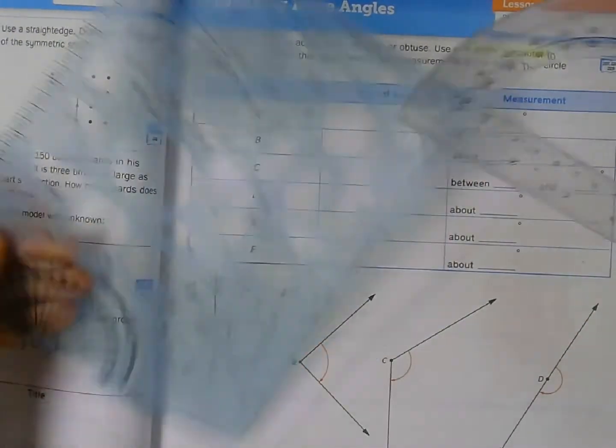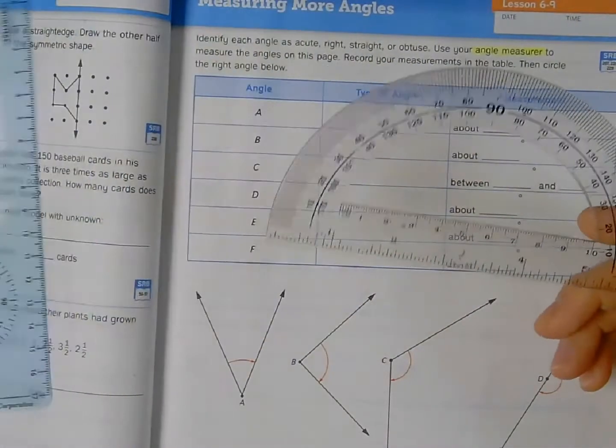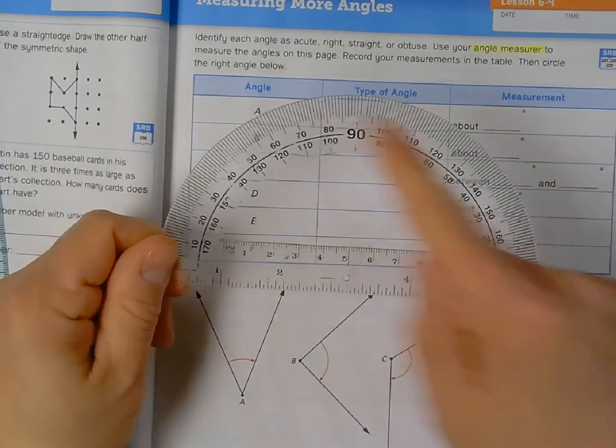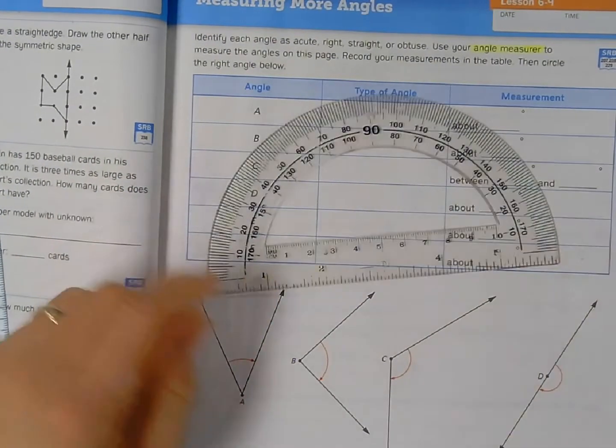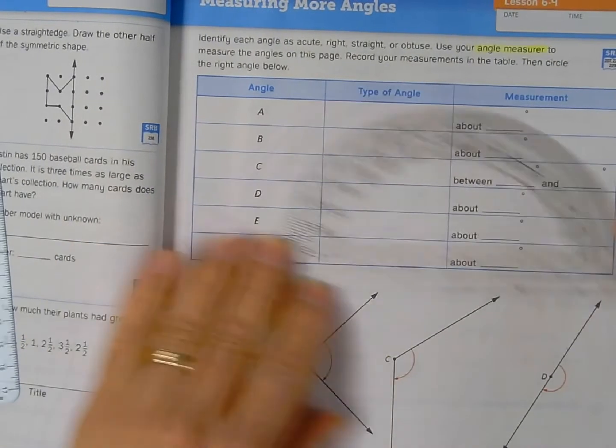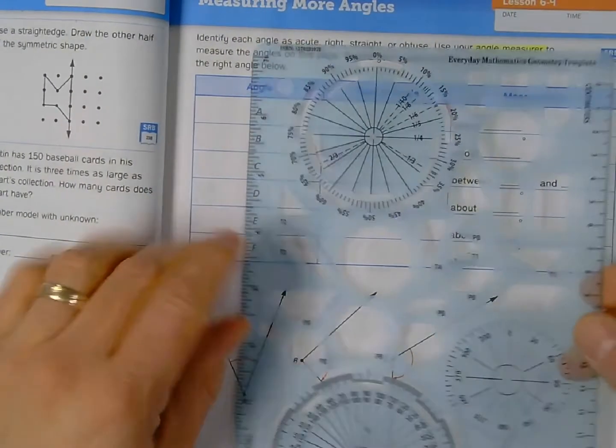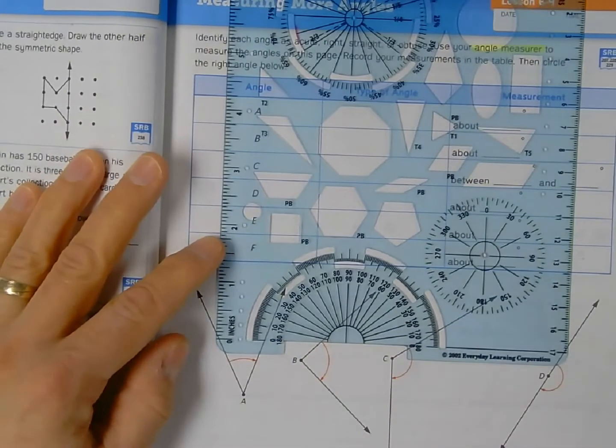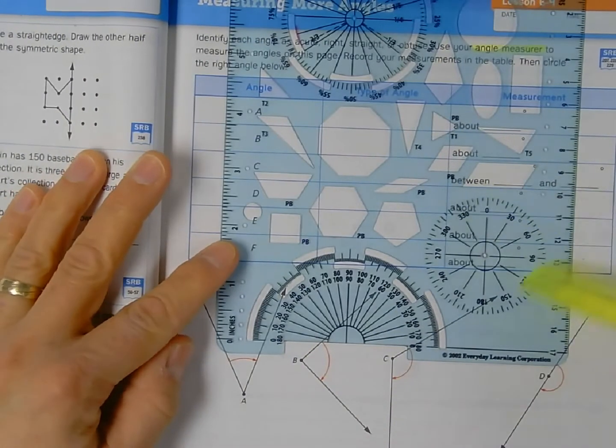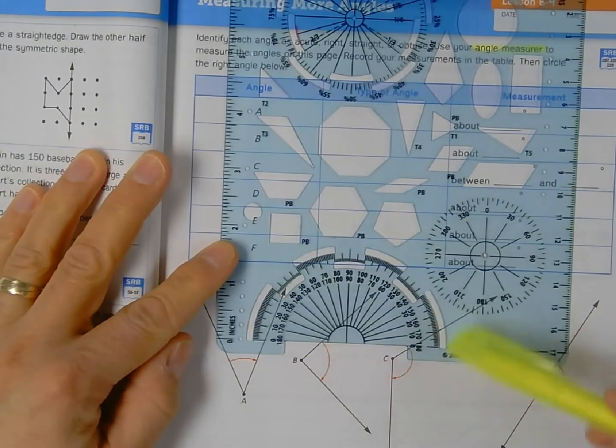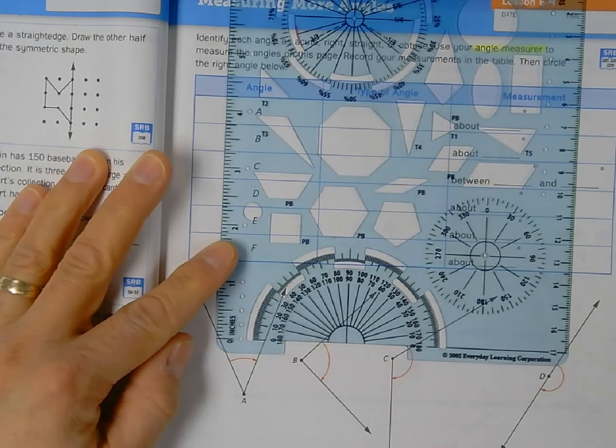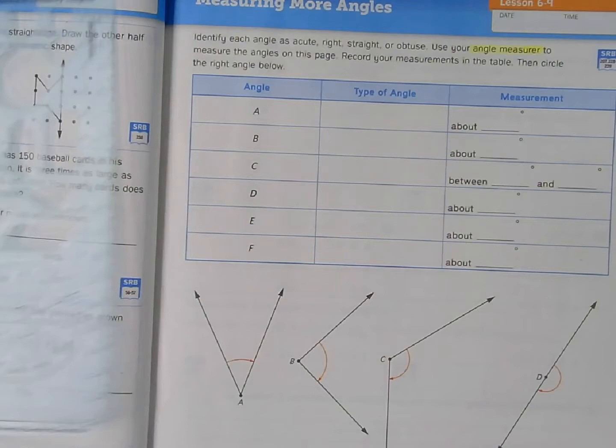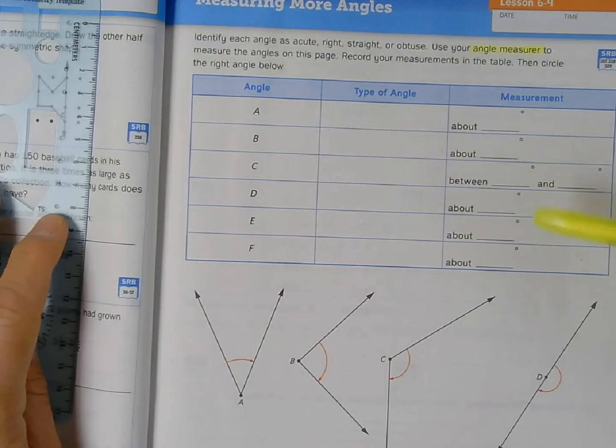In my hands right here, I have two examples of protractors. This is a semicircle or half-circle protractor that measures 180 degrees. Most of you have access to this math template that also has protractors. We have a full circle protractor here, and then we have a semicircle or half-circle protractor at the bottom. So we're going to use our math template to make some more exacting measurements.